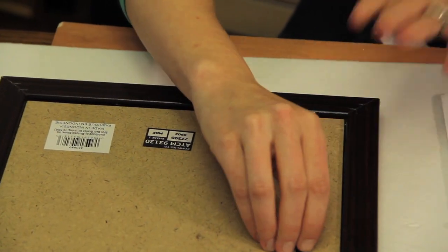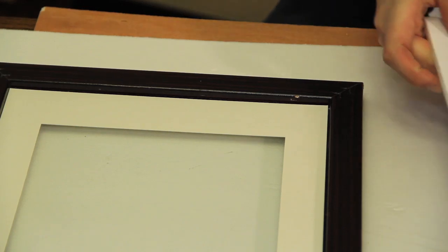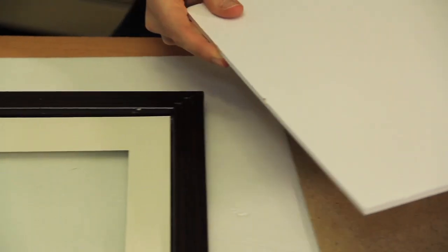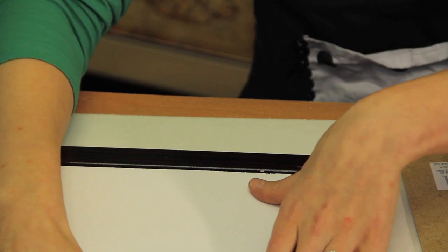If for some reason you don't want to go do that, you can always take a piece of foam board, cut to the size of the interior of the frame and place that in.